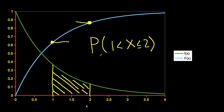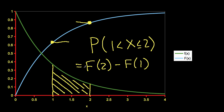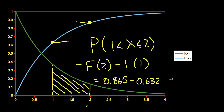So in this particular example, this probability will be F of 2, the cumulative distribution function at 2, minus F of 1. For this particular exponential distribution, F of 2 is 0.865, F of 1 is 0.632, and when I subtract those two, I get 0.233.